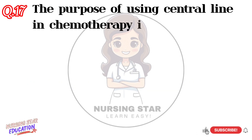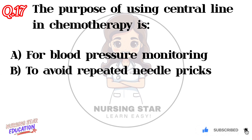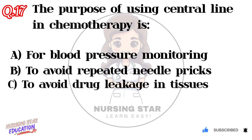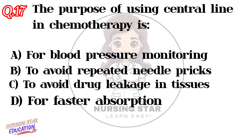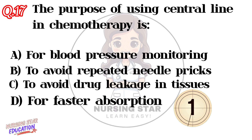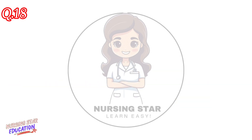Question number seventeen: The purpose of using a central line in chemotherapy is — Option A: For blood pressure monitoring. Option B: To avoid repeated needle pricks. Option C: To avoid drug leakage in tissues. Option D: For faster absorption. Correct answer: C — To avoid drug leakage in tissues.